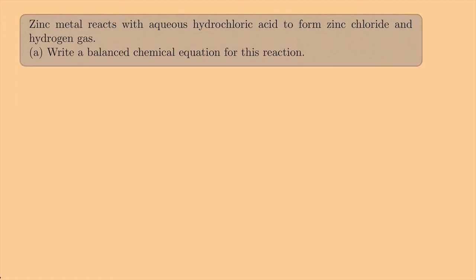So first let's look at Part A — write a balanced chemical equation for this reaction. We have zinc metal, so that's Zn solid, plus aqueous hydrochloric acid, HCl(aq), and that's going to give us zinc chloride — we'll come back to that — plus hydrogen gas, which is H₂(g).